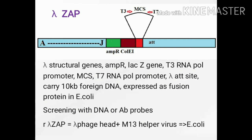It can carry 10 kilobase pair foreign DNA and the foreign DNA can be expressed as fusion protein along with beta-galactosidase in E. coli. Screening can be done with radiolabeled DNA or antibody probes. The recombinant lambda sap is packed into the lambda phage head and infected along with M13 helper virus into the E. coli host.